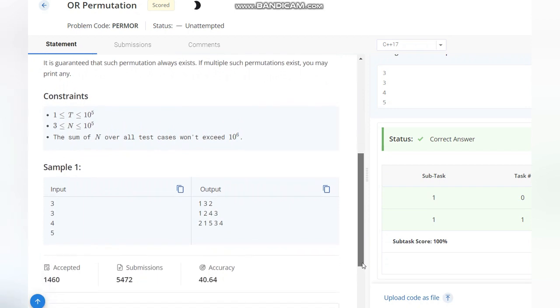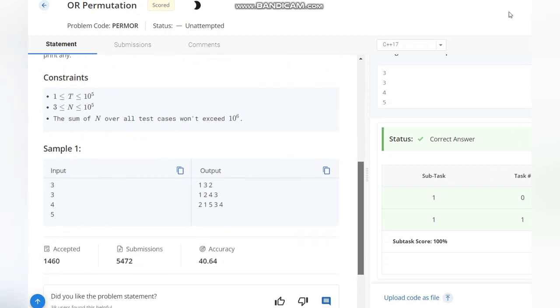So for the first test case, as you can see, we have length of 3, so we have basically 1, 2, 3. In case of 1, 2, 3, you need to have a permutation such that a_i is not equal to a_(i-1) OR a_(i-2).